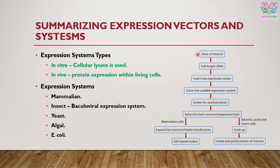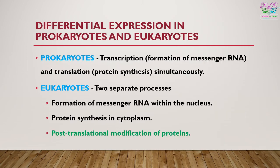Developing an expression vector involves first identifying the gene and obtaining the full-length cDNA from that gene, inserting it into the expression vector through a cloning procedure, screening the positive clone, selecting the best construct, and then identifying the expression host based on the researcher's requirements. Before concluding, additional information regarding differential expression in prokaryotic and eukaryotic cells when utilizing expression vectors will be covered.